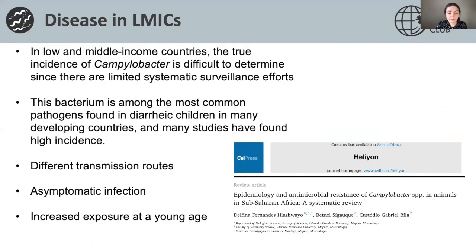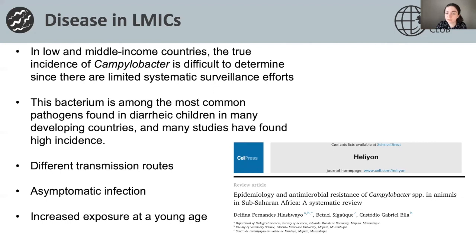In terms of disease in lower and middle-income countries, the true incidence of Campylobacter is very difficult to determine due to limited systematic surveillance efforts. The difference in hygiene would lead to a difference in transmission routes — it's likely a lot less often through contaminated poultry, but more often through poor environmental sanitation and close contact with animals in domestic settings, in rural and agricultural communities.